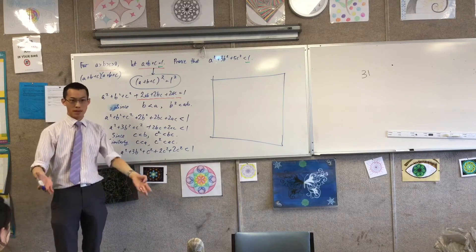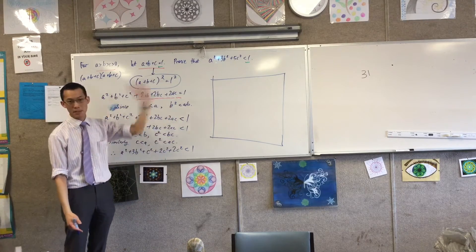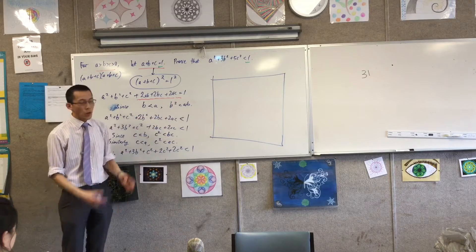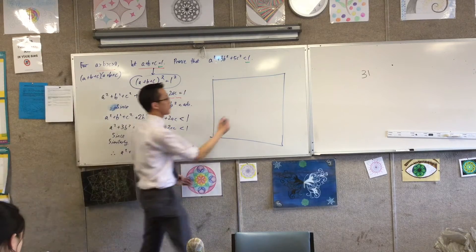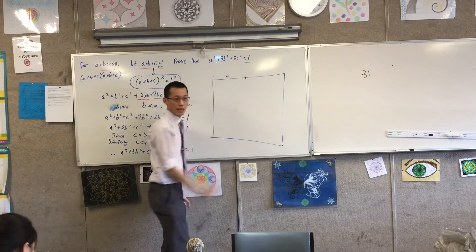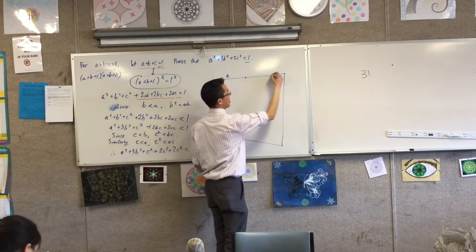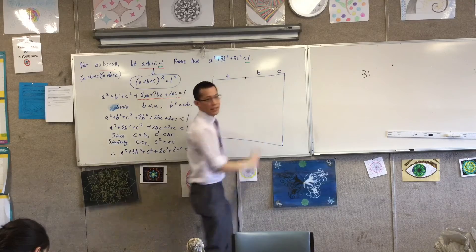Now I can't draw every single combination of a and b and c, obviously that would be an infinite number of diagrams. All I need to do is draw a diagram where the concept, the principle is there. So for instance, if I make a this length over here, and then make b something like that.